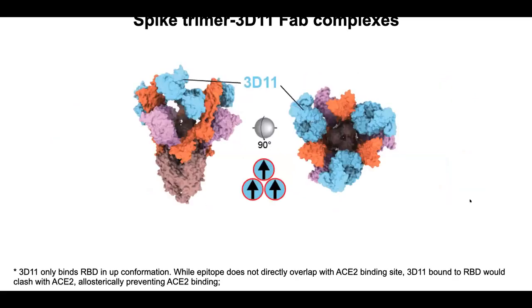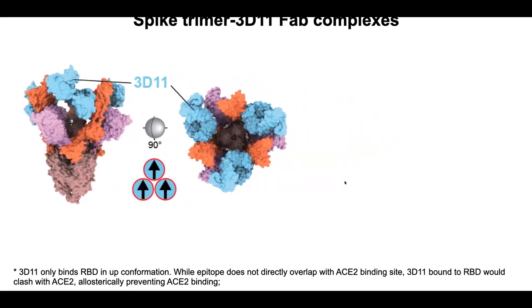Now 3D11 is different. We found only one structure with 3D11 bound — three RBDs all in the upper position. Because of this binding mode, the binding is incompatible with the RBD in the down position. So 3D11 only binds RBD in the upper position, and it really locks all three of them in the upper position. Looking at the individual binding in detail, you can see that 3D11 pushes the RBD further toward an even more open position than ACE2 binding — what we call a 'super-open' position.